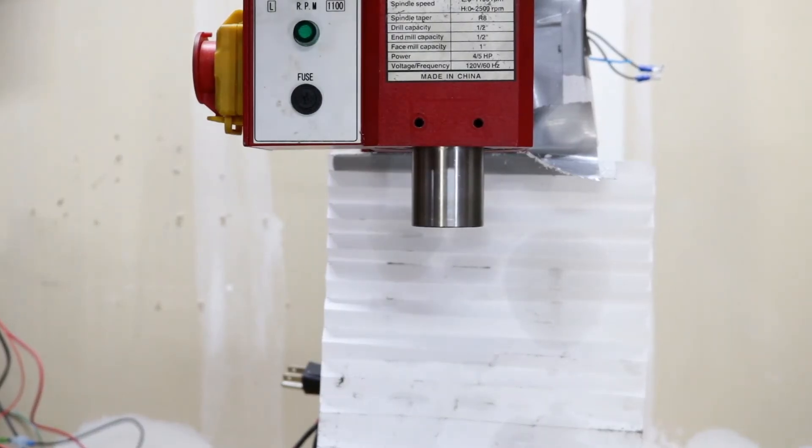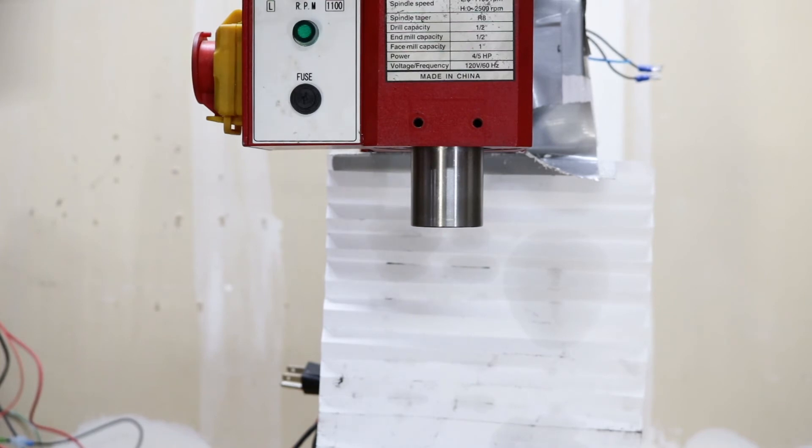Alright, so now that we've got our max and mins dialed in at least, let's go ahead and just start playing around with it from the low end. So spindle enabled, 100 RPM, still really doesn't do anything at 100 RPM.